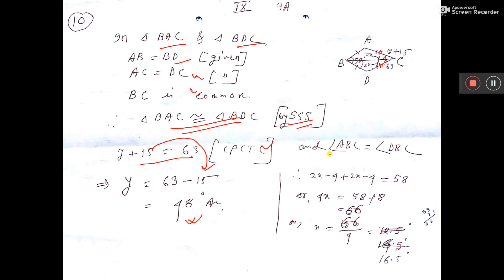Again you can tell that this angle ABC equal to DBC. So this total is 58 degree. This total is 58 degree.